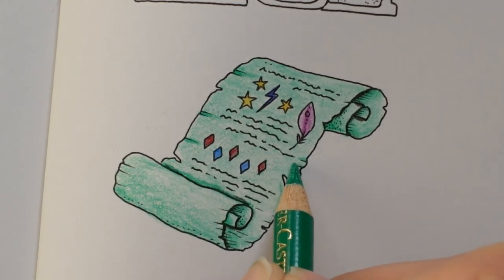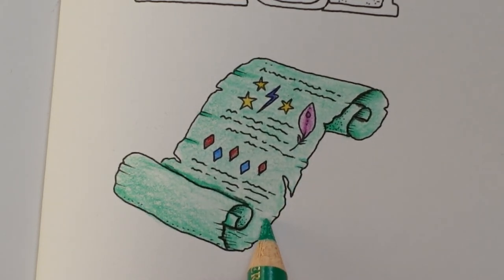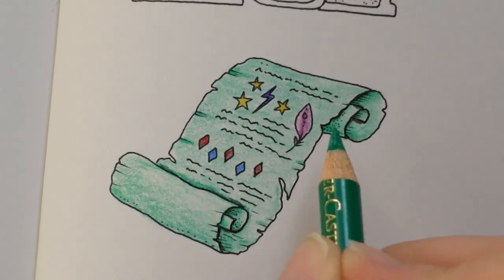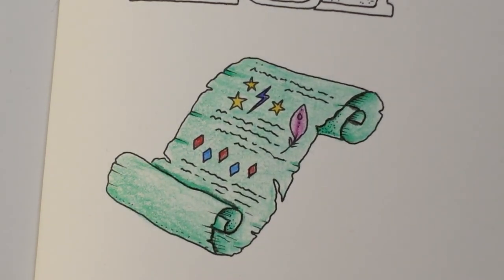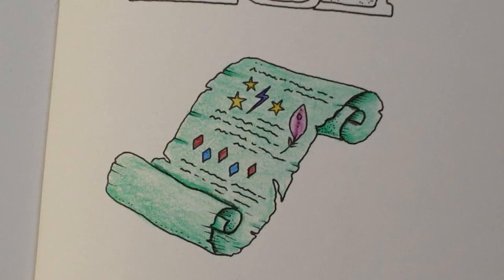Now this I think is the opposite. I think it comes outwards. So just a few little bits. Just to make the paper look a little bit more crumply. And then we're done.